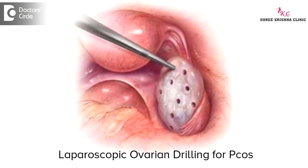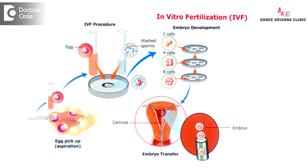Coming to fallopian tubes — if there is any blockade in the fallopian tube, if it is a milder form, then we can surgically correct it. If it is a severe form, we will usually go to in vitro fertilization.